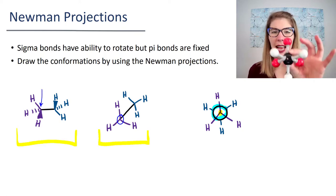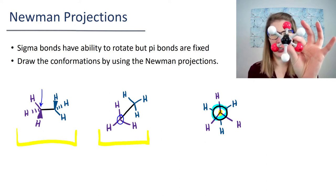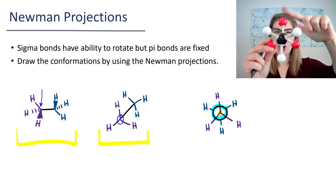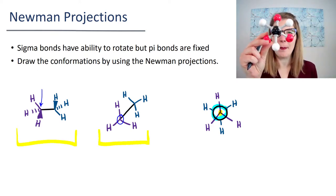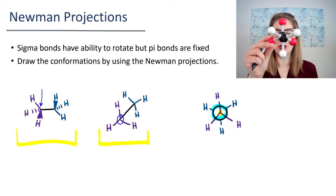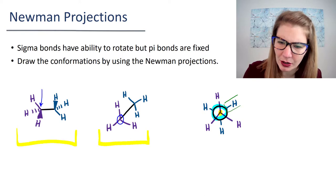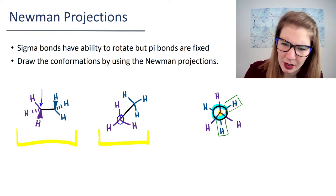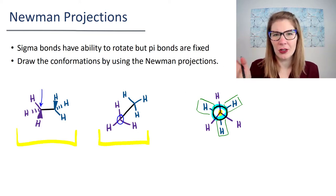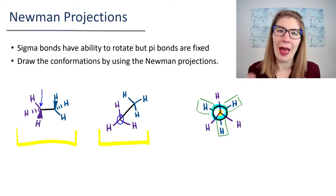When we look at our Newman projection, your front carbon is just where those three bonds to hydrogen meet. The back carbon is the big circle. Notice how you have one, two, three atoms attached to that big circle, and then you have the front carbon where there are one, two, three atoms directly attached. The bonds to those hydrogens stop at the big circle, because that big circle is your back carbon.